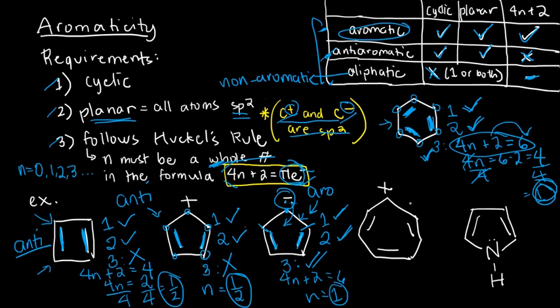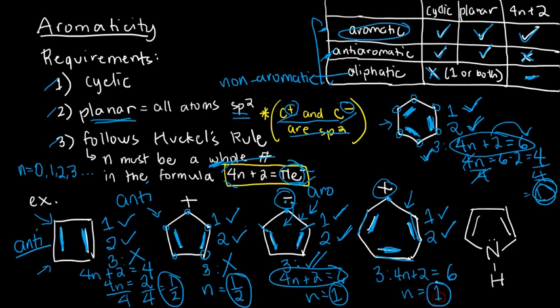This one, let's see. It's cyclic, of course. Planar. Yes. Right. I have all double bonds here. Then the remaining carbon has a charge. And then how about the 4n plus 2? How many are the pi electrons here? Two, four, six. And remember, positive means no electrons, so it doesn't add any two electrons. So 4n plus 2 equals 6. And just like a while ago, I'm sure that my solution here will be 1. And therefore, it also passes the Huckel's rule. And therefore, this is also aromatic.